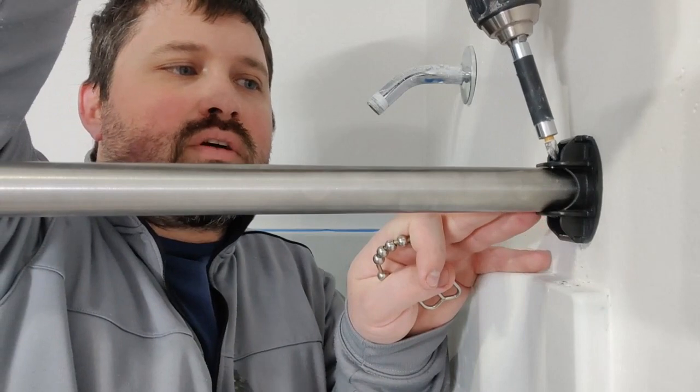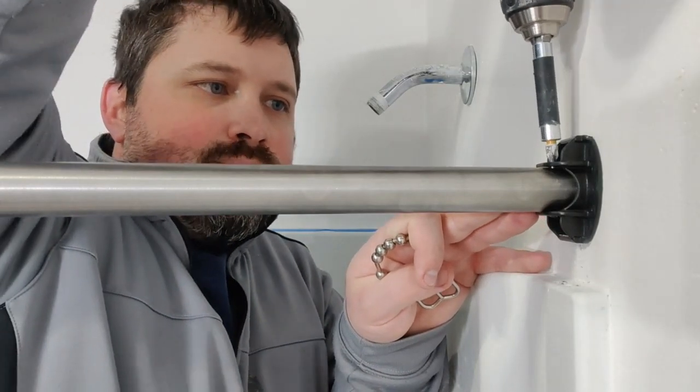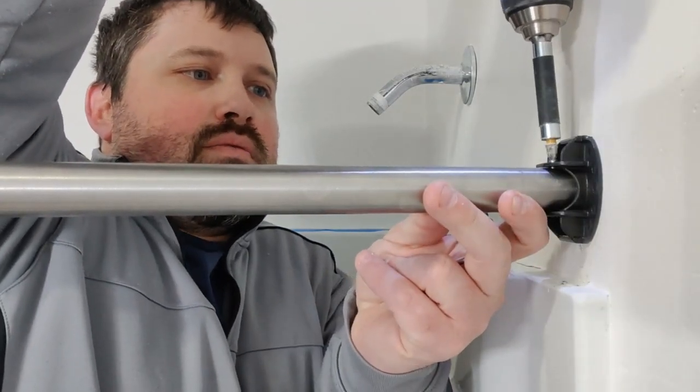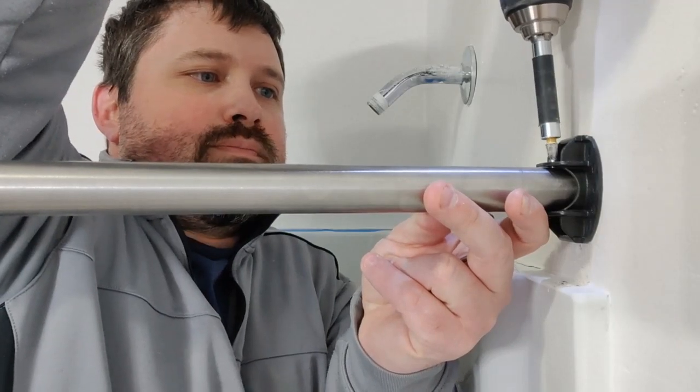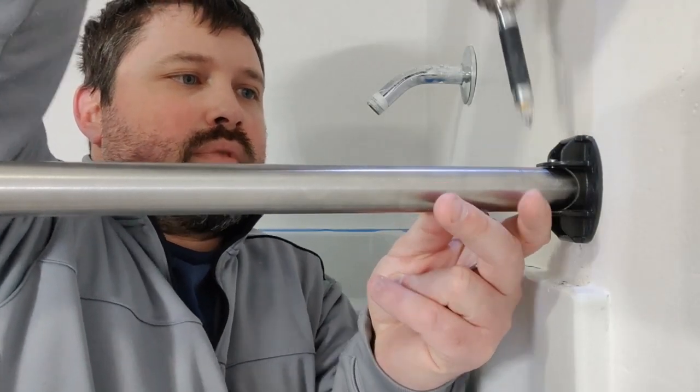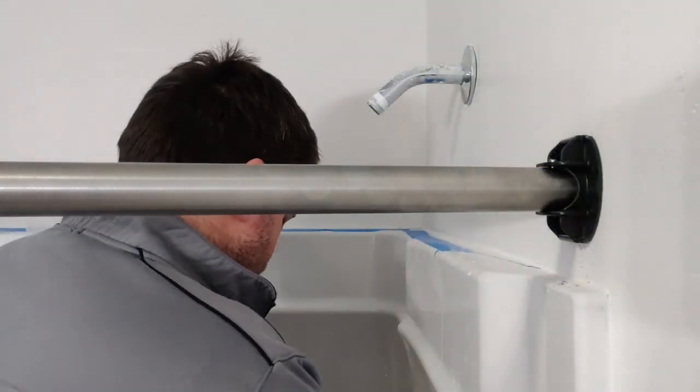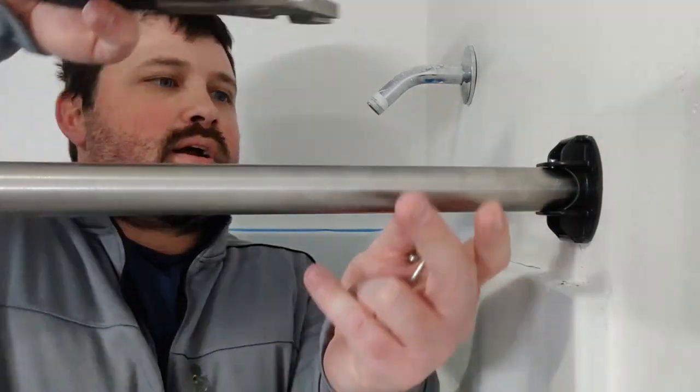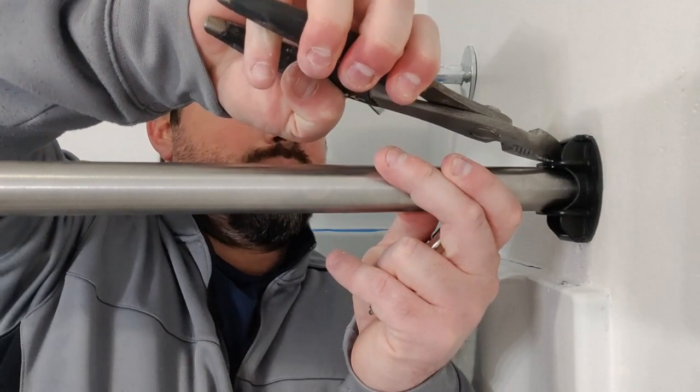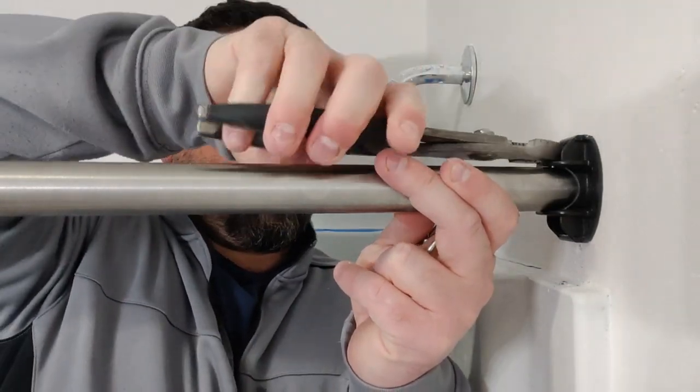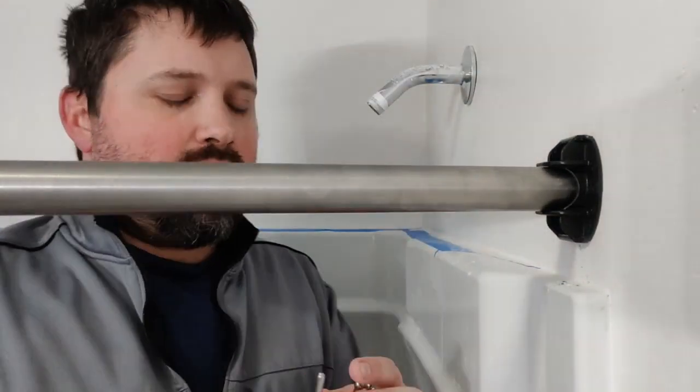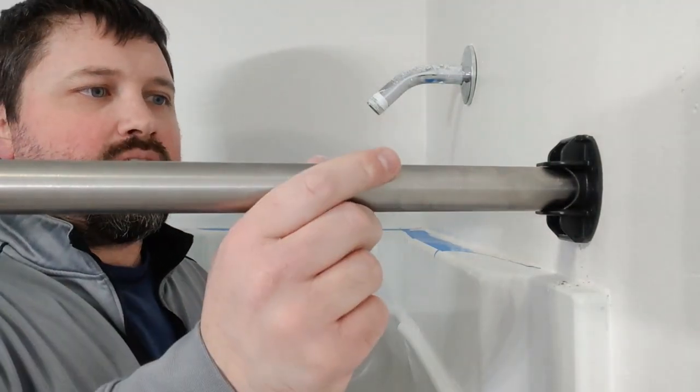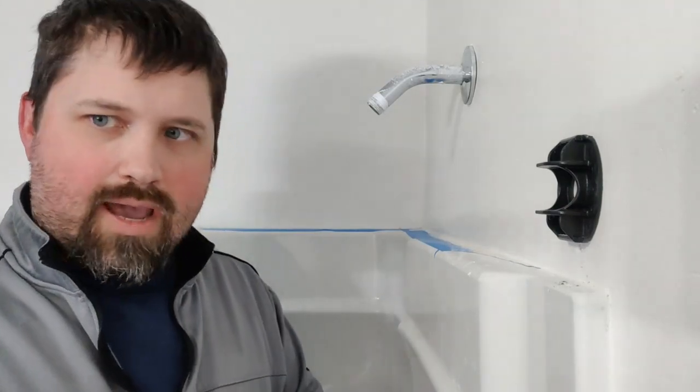You're going to either take a screwdriver or your drill and just reverse it back out. Now I don't have small hands. So I'm actually going to take a pair of pliers here and I'm just going to wiggle that out. And then all you got to do is push it back. And there you go. You take that off like that.